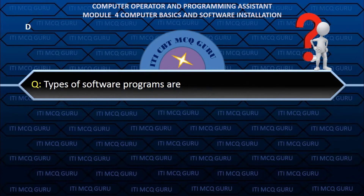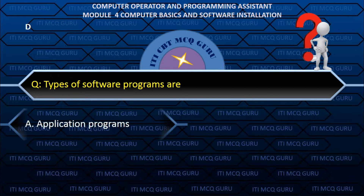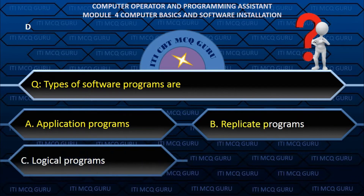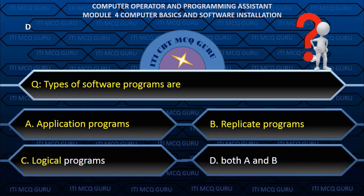Types of software programs are — D. Both A and B.